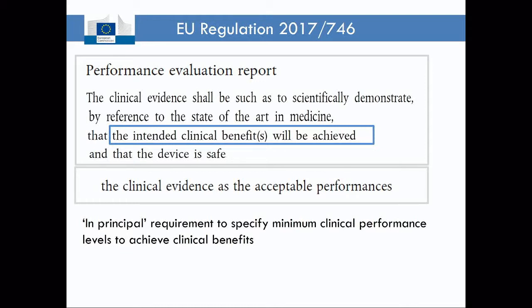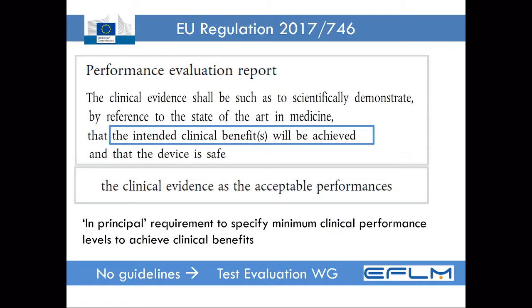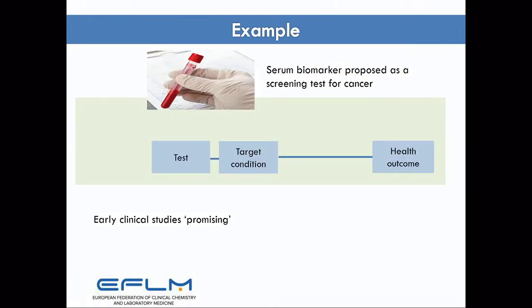That's reasonable because I don't think anyone would argue that if evidence demonstrated unacceptable performance — say that the test was useless or the test was harmful — that it shouldn't be approved. The problem is that we have no practical guidelines about how to distinguish between acceptable and unacceptable performance. And that's the problem that came to the Test Evaluation Working Group and the work that I'm presenting here.